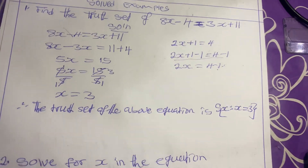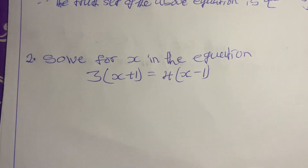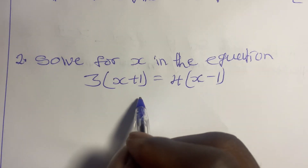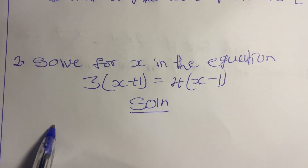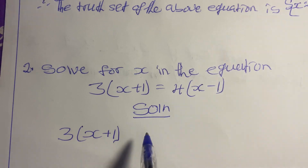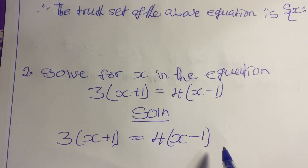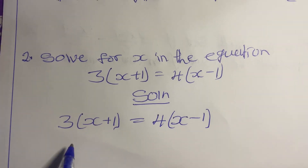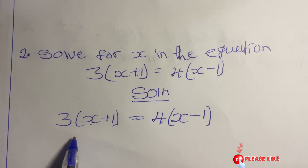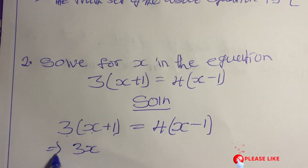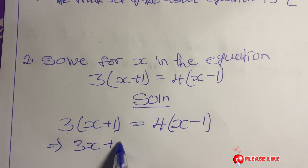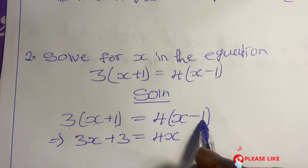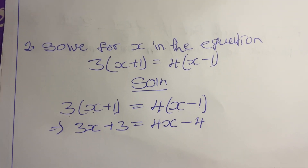Example 2: solve for x in the equation 3(x + 1) = 4(x − 1). Remember this is the bracket form and always rewrite the question before continuing. We expand the brackets: 3 times x gives 3x, and 3 times 1 gives 3, so the left side is 3x plus 3. On the right, 4 times x gives 4x and 4 times negative 1 gives negative 4.